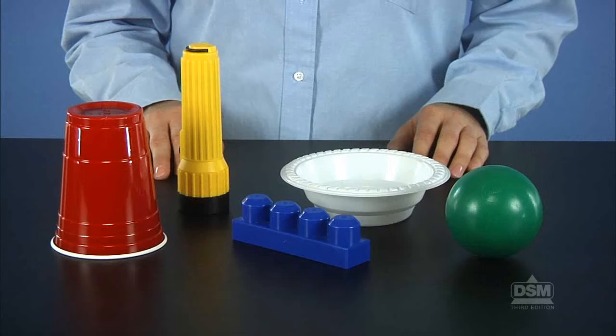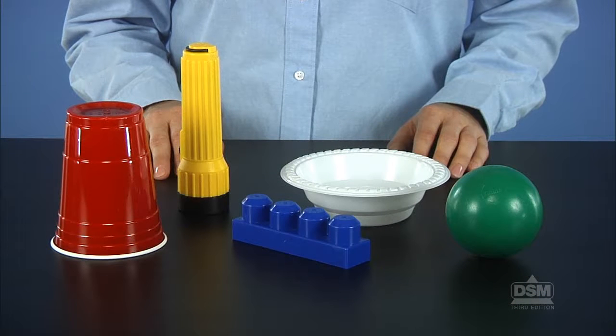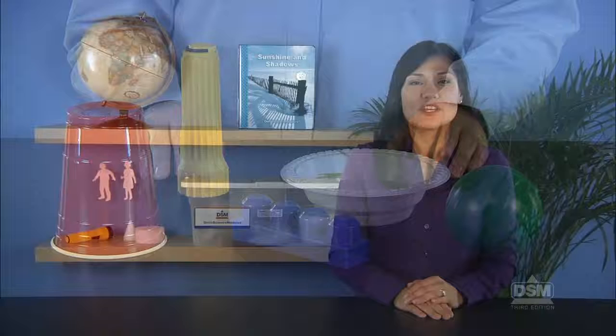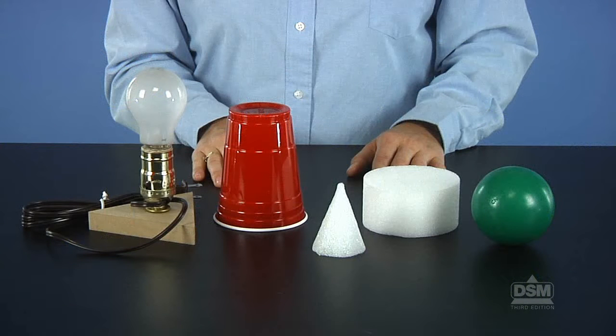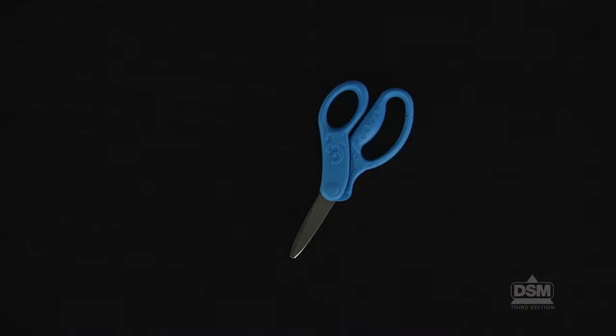Light sources should be positioned far enough away from each other so as to have no interference. Collect enough assorted objects, preferably tall ones that will cast good-sized shadows, so that each team of four has at least three objects. Each team of four will need four objects, including one cone or disc and a light source with a light bulb. To complete the Activity Sheet, each student will need a pair of scissors and access to the glue.